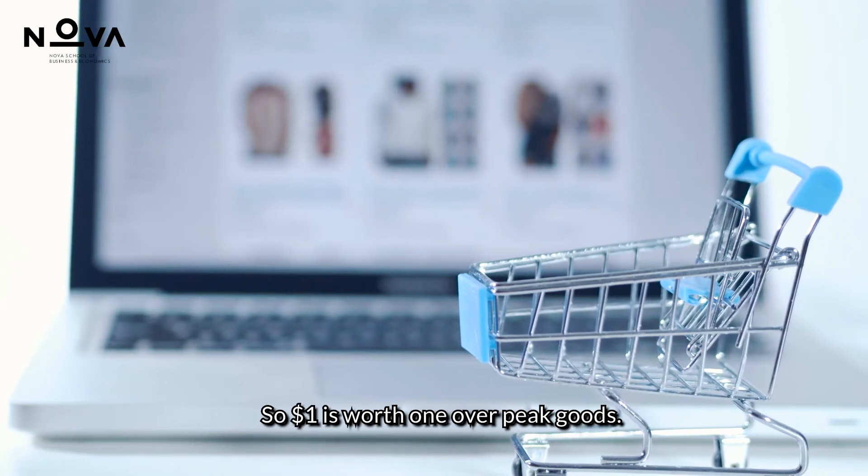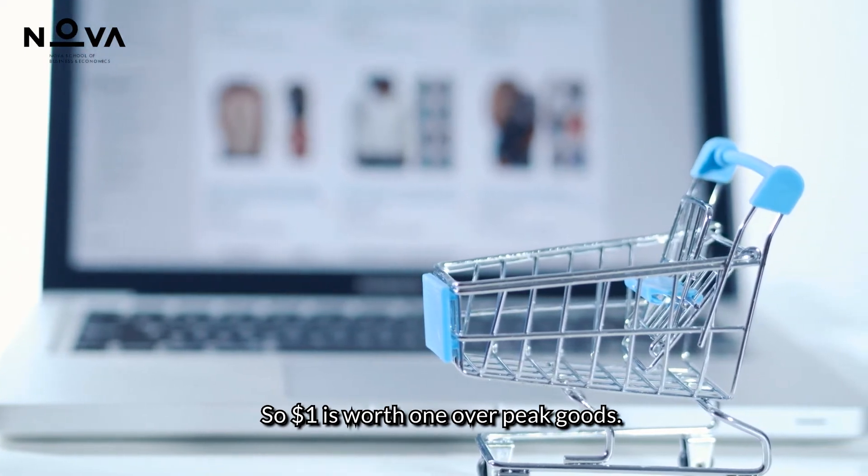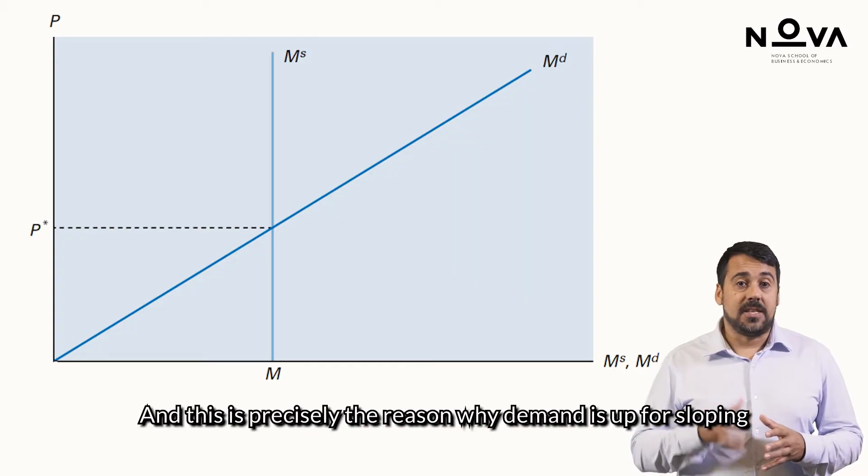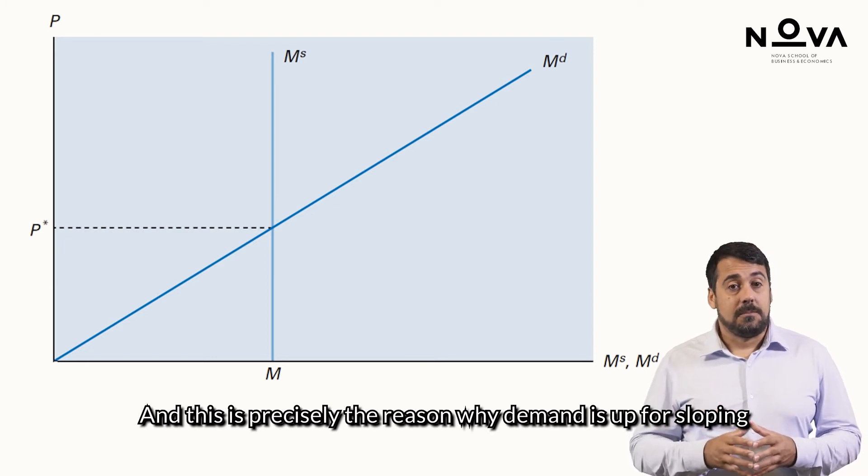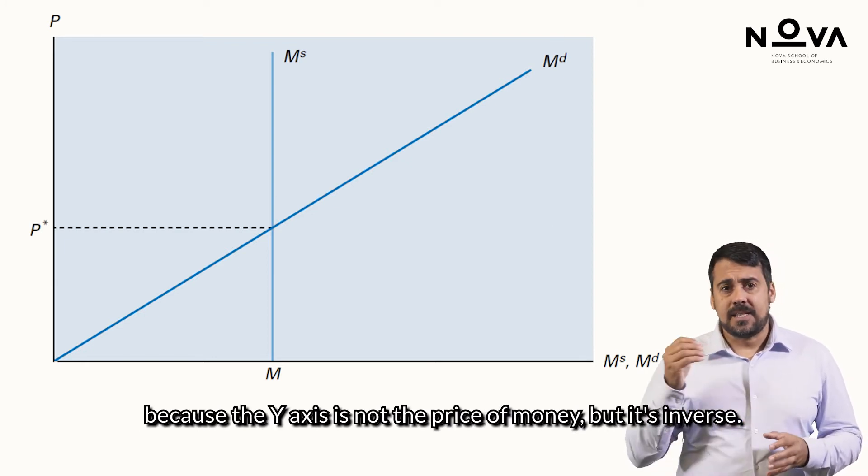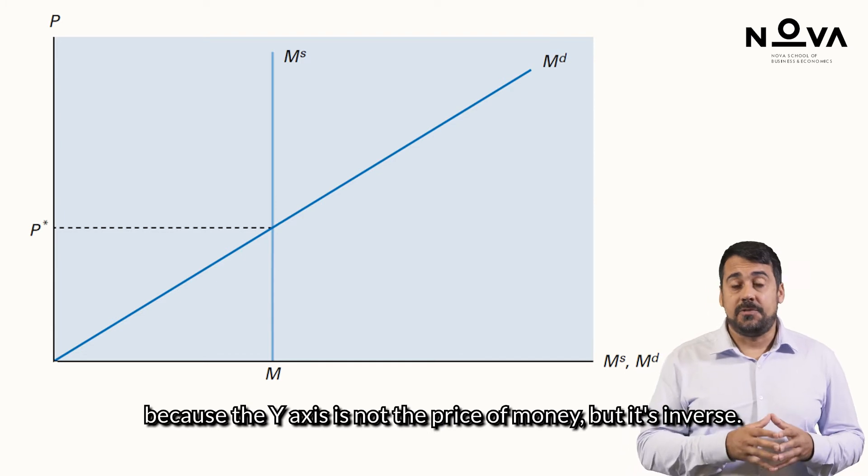So $1 is worth 1 over P goods. And this is precisely the reason why demand is upward sloping, because the y-axis is not the price of money, but its inverse.